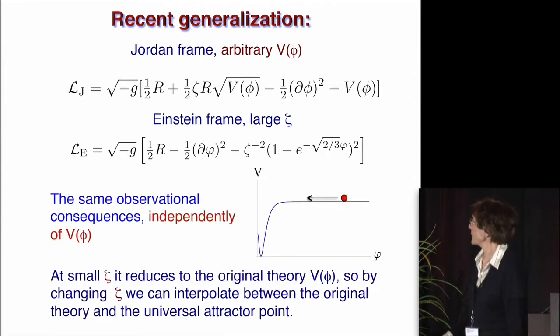No matter how you start, you end up with this interesting potential, and this is the situation which brings you to extremely flat region, and then you immediately have, independently of the original potential, you have the same observational consequence. You have a plateau, and at small ζ, it is your original theory, which could be anything you want, but then it starts growing, and you interpolate exactly as in case of Higgs inflation versus Starobinsky model. Actually, it is a property of any of these models.